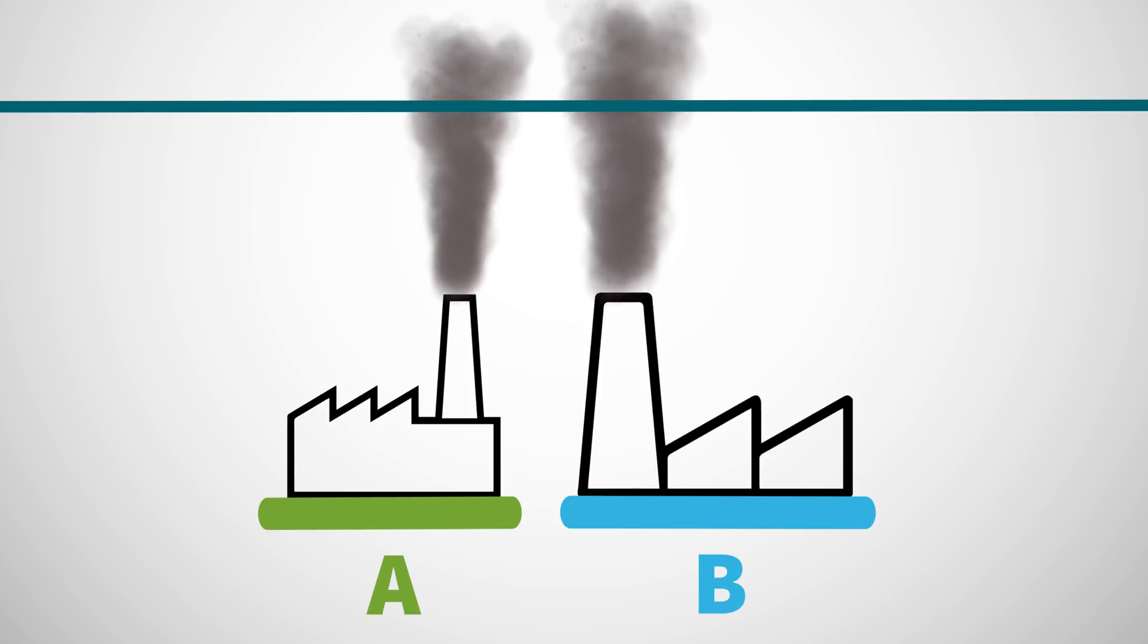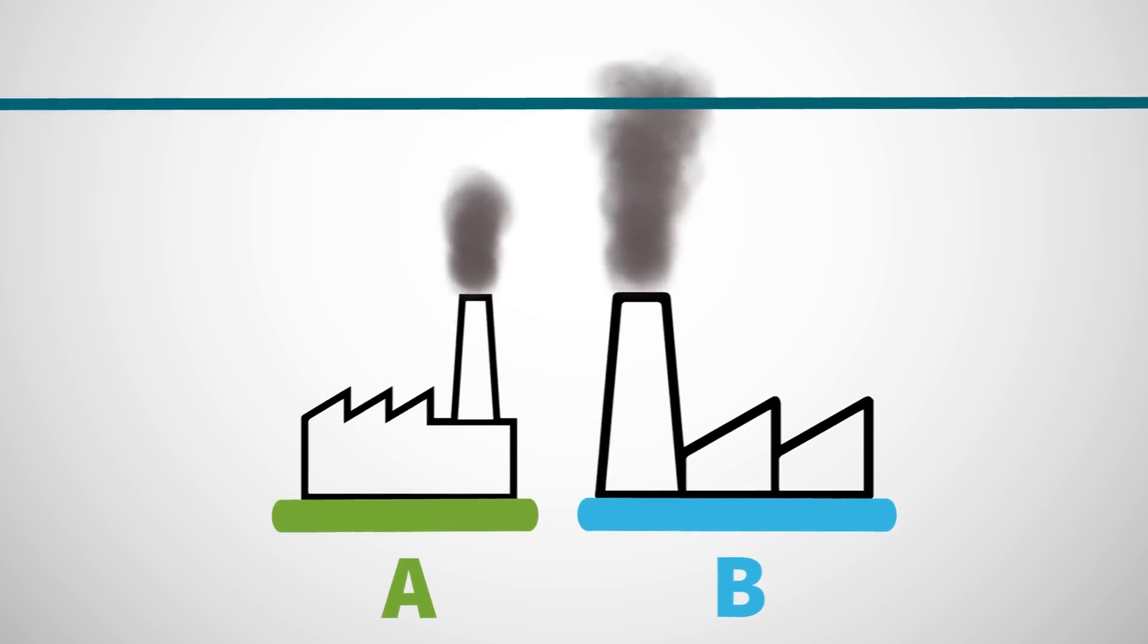Based on the market price of carbon, Company A and B determine what investments they can make that will reduce their emissions at a lower cost than paying the carbon price. They then must ensure their permits equal their remaining emissions.